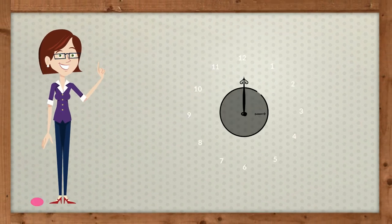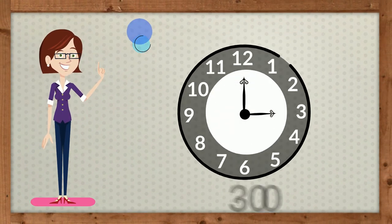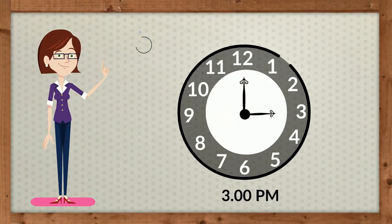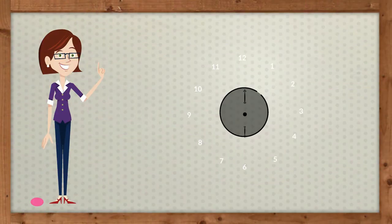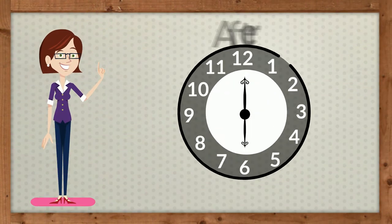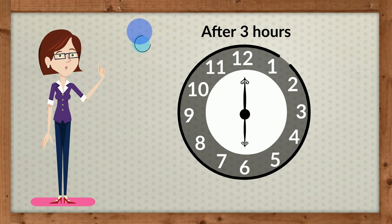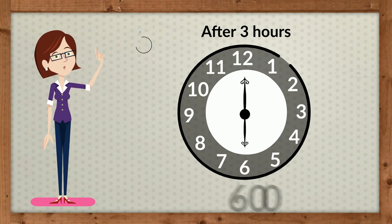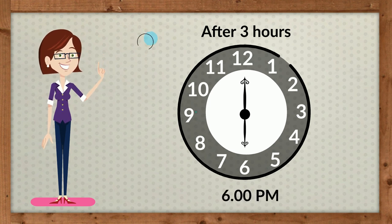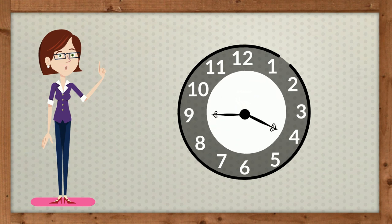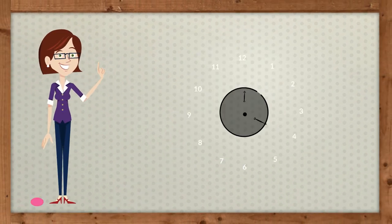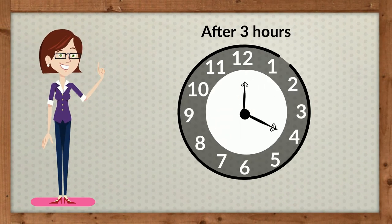If it is 3 PM in the afternoon, what will be the time after 3 hours? After 3 hours it will be 6 PM.